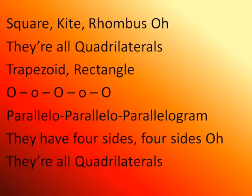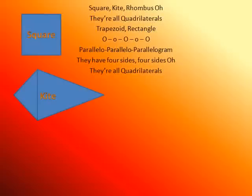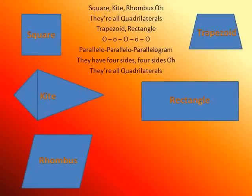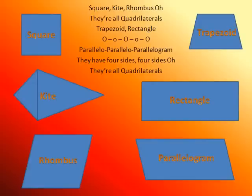Square, kite, rhombus — they're all quadrilaterals. Trapezoid, rectangle. Parallelogram, they have four sides, four sides. They're all quadrilaterals. Square, kite, rhombus — they're all quadrilaterals. Trapezoid, rectangle. Parallelogram, they have four sides, four sides. They're all quadrilaterals.